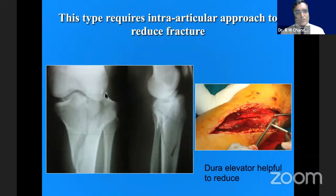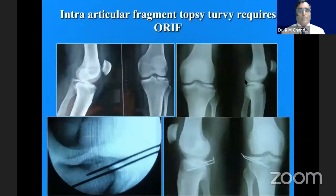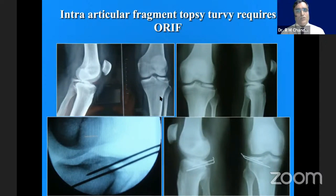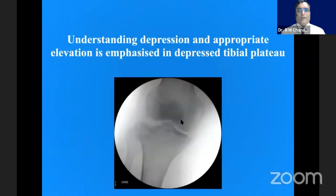This typical fracture — if you pull it, it doesn't reduce well into position. A dura elevator with a small arthrotomy and getting the fragment flipped back into the joint helps. This is an interesting topsy-turvy fragment where the articular surface is completely down. This would require opening the joint, turning the fragment, and then fixing it appropriately.